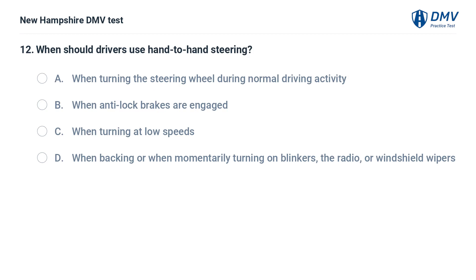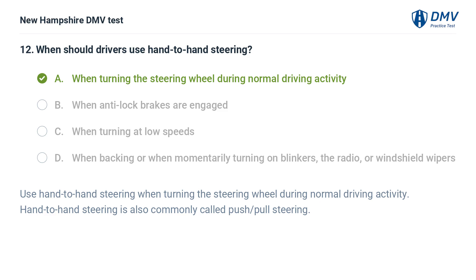When should drivers use hand-to-hand steering? A) when turning the steering wheel during normal driving activity, B) when anti-lock brakes are engaged, C) when turning at low speeds, D) when backing or when momentarily turning on blinkers, the radio, or windshield wipers. The answer is A, when turning the steering wheel during normal driving activity. Hand-to-hand steering, also commonly called push-pull steering, is used during normal turning.